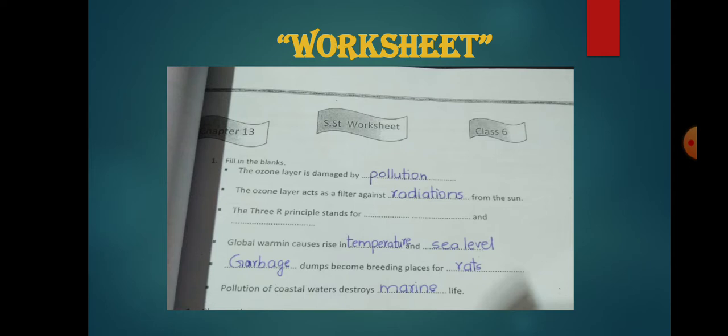The ozone layer is damaged by pollution. The ozone layer acts as a filter against radiations from the sun. And the third blank is the three R's principle stands for - you have to write it by yourself, it is very easy.